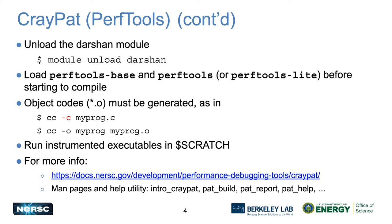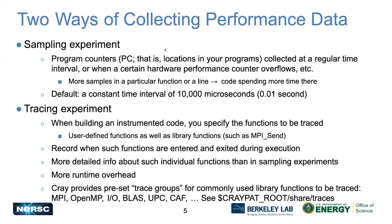The wonderful thing is you also need to create an object code .o file. You need to run the instrumented executable from the Scratch parallel file system — if you run it from the home filesystem, it will probably not run. There are two ways of collecting performance data: one is a sampling experiment, which samples the program counter — the location in your program — at regular time intervals. By default, CrayPat uses a time interval of 0.01 seconds. If you see more samples at a particular location, that means the code is spending more time there.